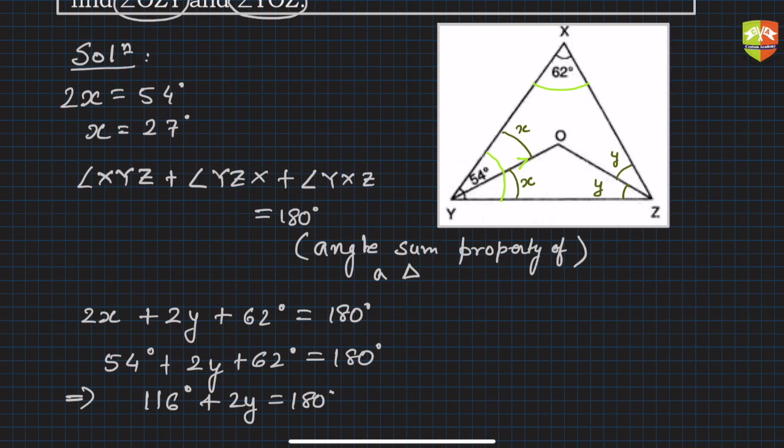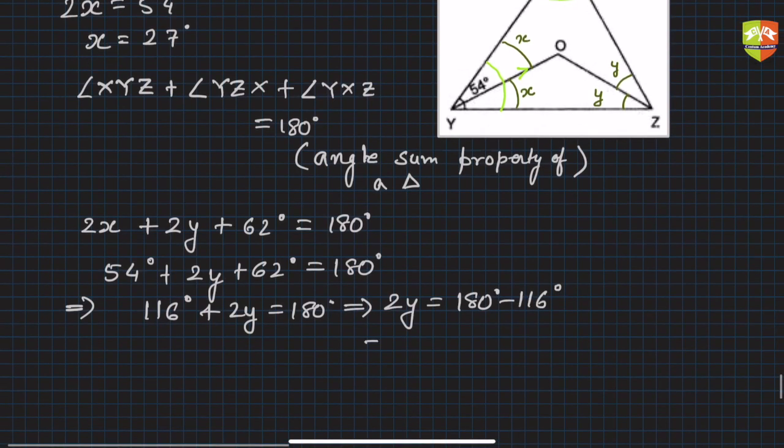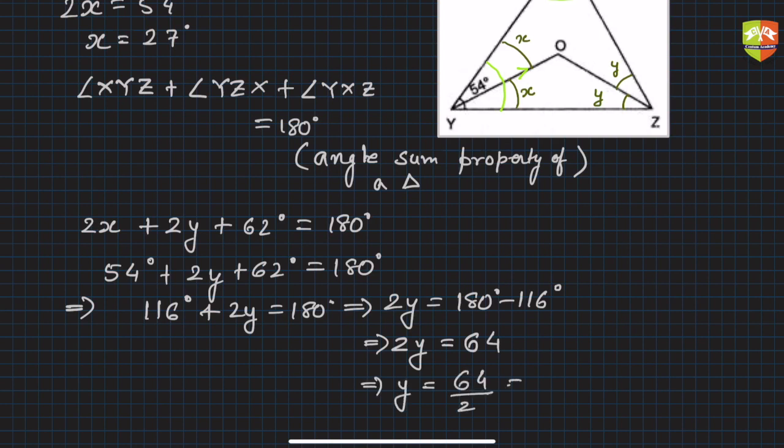This implies 54 plus 62 is 116 degrees, and this plus 2y is 180 degrees. So from here you can calculate y very easily. 2y equals 180 minus 116, which is 64 degrees.